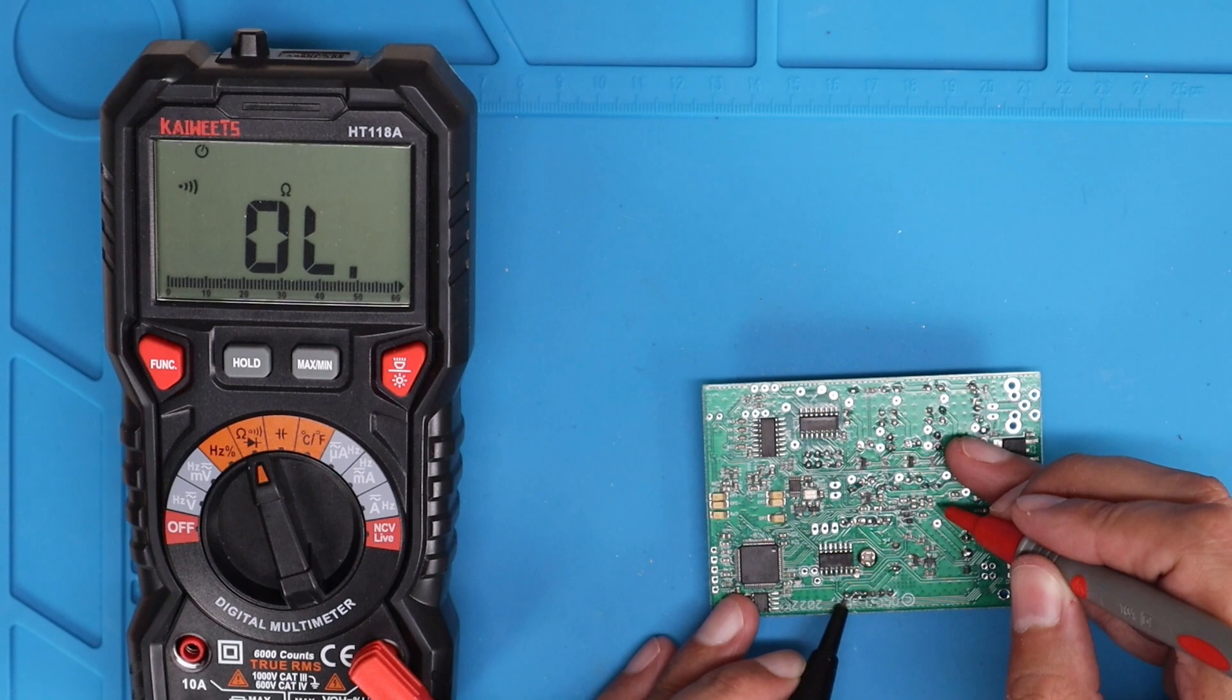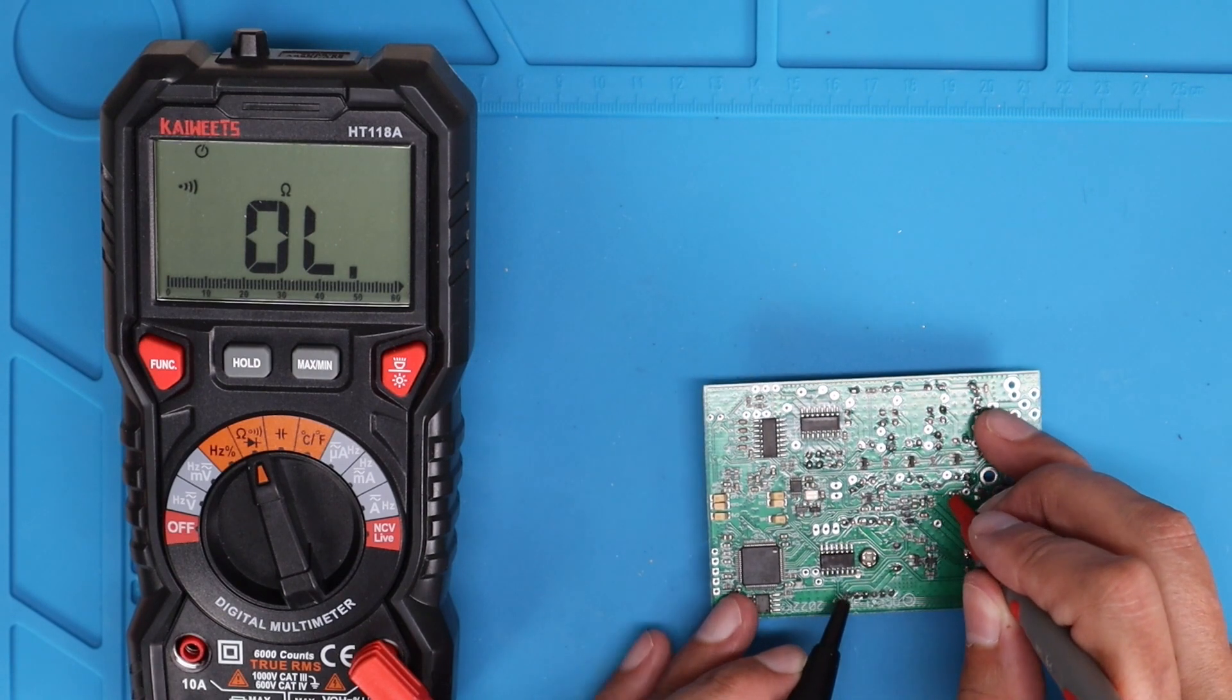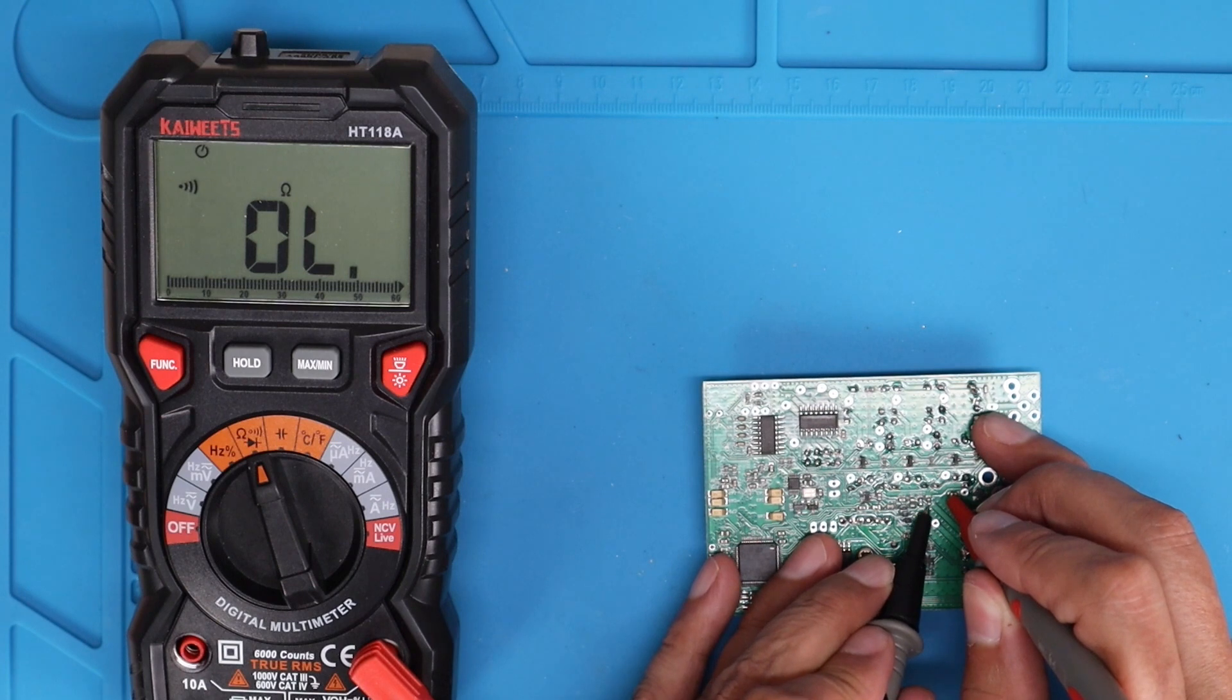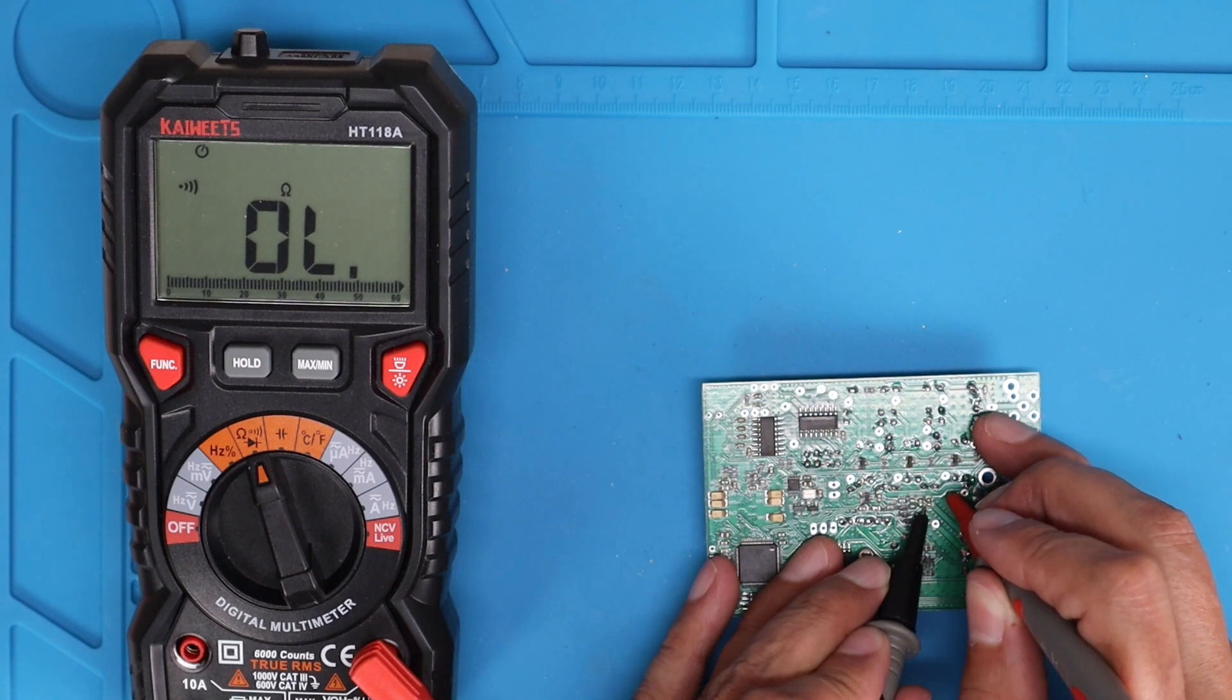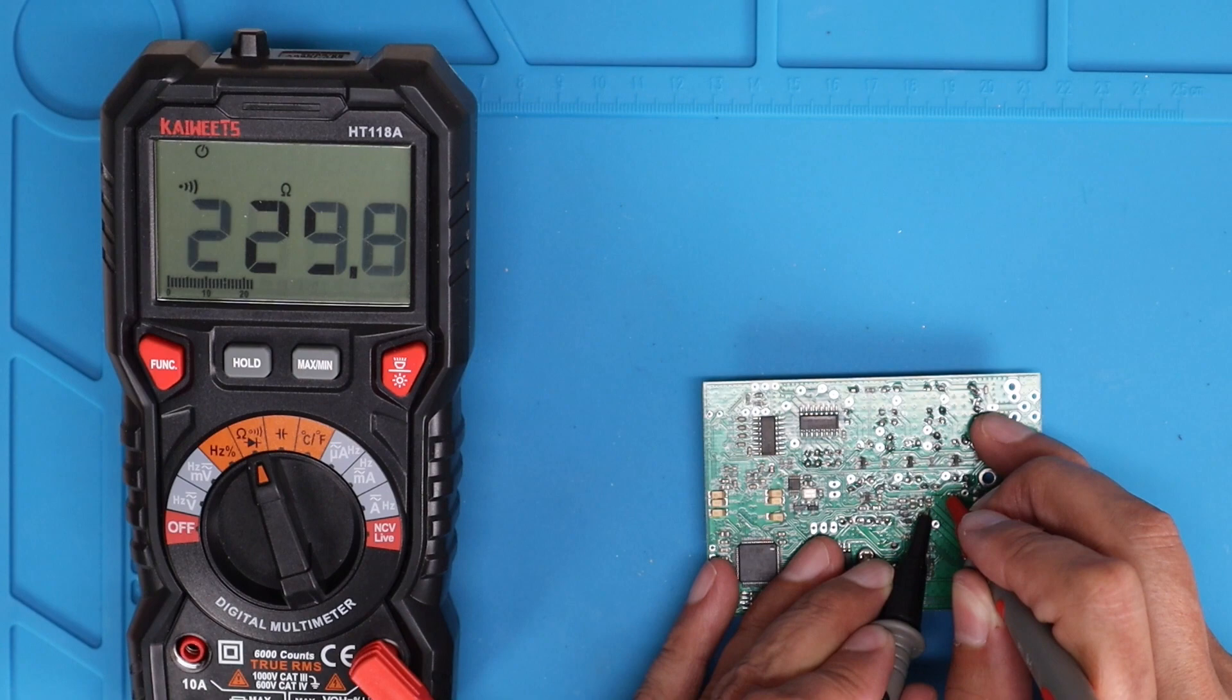And now we'll check the two B points. And we've got good continuity there as well. So, we know we're good to go.